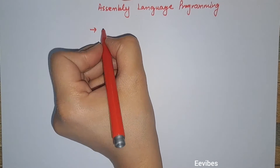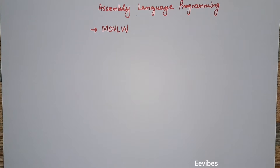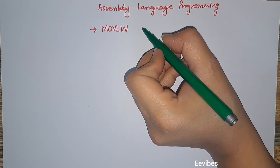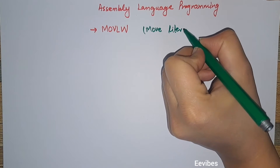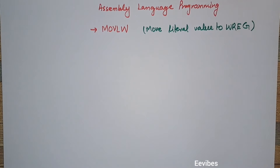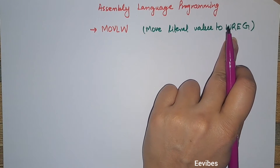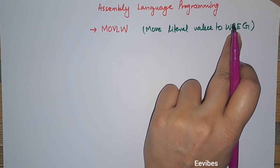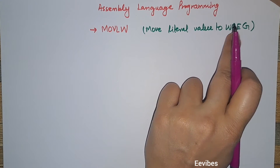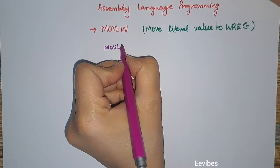The first and most widely used instruction is Move Literal Value to W (reg). The W register, or working register, is used for performing arithmetic or logical instructions and stores the result. It is an 8-bit register, and if you want to perform any addition, multiplication, AND, or OR operation, you need to involve the W register.